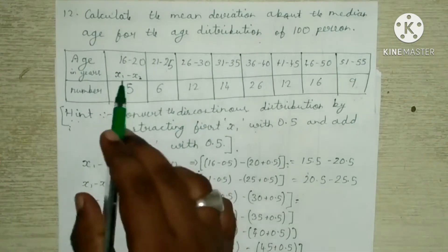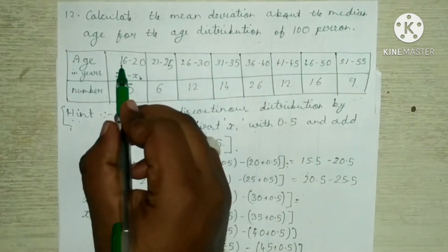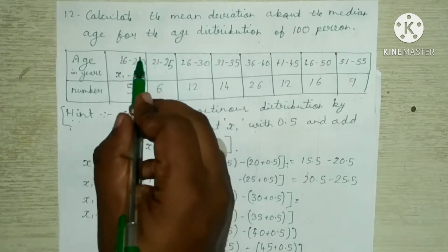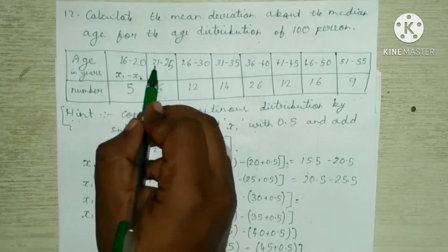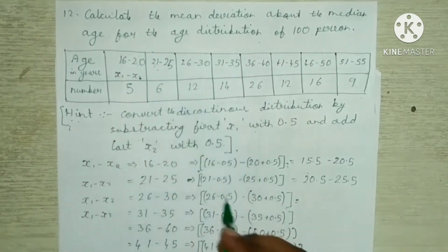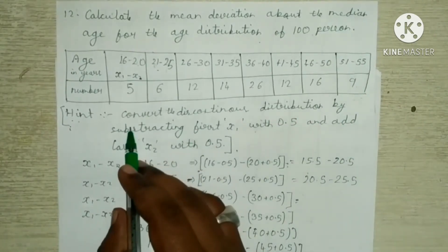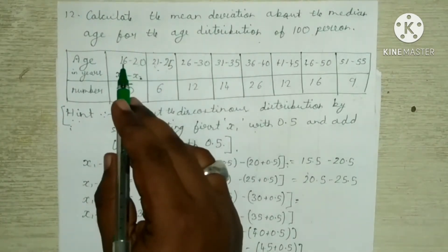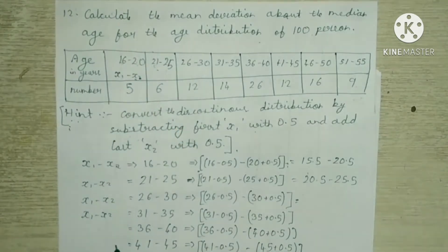The data has been given as integers. First, check: x2 of the first term and x1 of the second term should be the same. Here x2 is 20 but x1 of the next term is 21, so it is discontinuous. Convert this discontinuous distribution into a continuous distribution by subtracting x1 with 0.5 and adding x2 with 0.5.